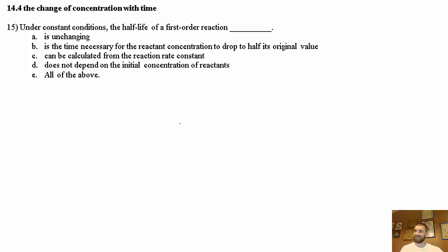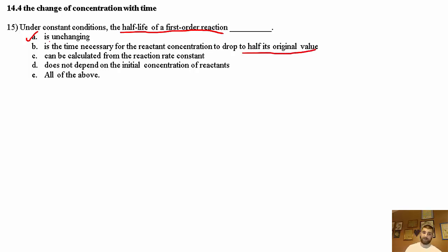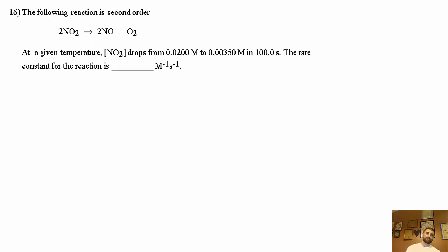Taking a look at 14.4 problems: the change of concentration over time. Problem 15 says under constant conditions, the half-life of a first-order reaction — just like nuclear decay — is unchanging. It is the time necessary for the reacting concentration to drop to half its original value. It can be calculated from the reaction rate constant and does not depend on the initial concentration of the reactants. So the answer is E, all of the above.